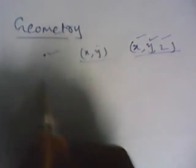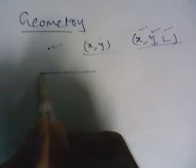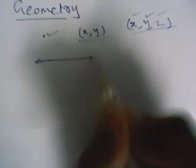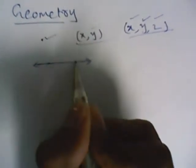Apart from the concept of a point, coming to the concept of a line: the collection of unlimited points is nothing but a line. This is the definition of a line. A line can be extended in both directions. We can name a line by taking any two points on it — here I'm taking points A and B, so we can name this line as line AB.